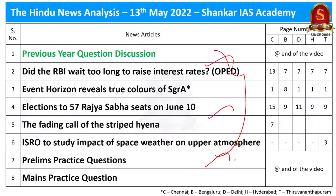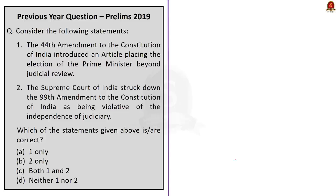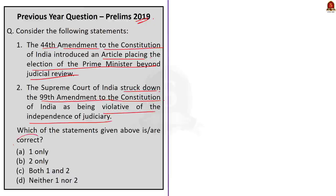Let's start our discussion with this previous year question. This question was asked in the year 2019. Consider the following statements. The 44th Amendment to the Constitution of India introduced an article placing the election of the Prime Minister beyond judicial review. Statement 2: The Supreme Court of India struck down the 99th Amendment as being violative of the independence of judiciary. We have to find the correct statements here.